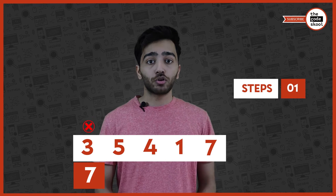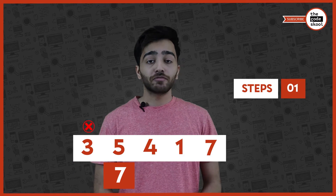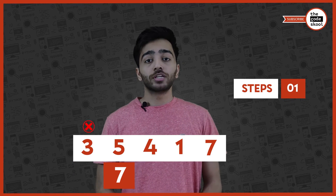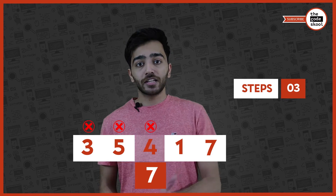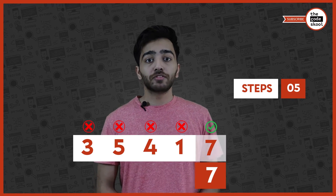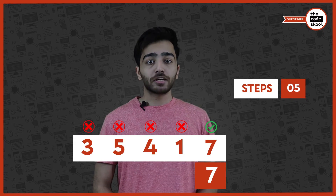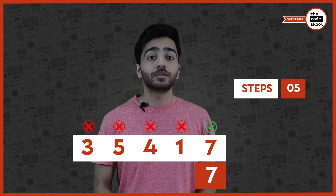Now let's look at another problem where we're given an array and a number, and we need to find if this number exists in the array. We start from the first element and check if it equals the given number — that's one step. Then we move to the next element and do the same thing, taking another step, and we keep doing this until we find the element. In the fifth step we find element 7, which equals the given number, so total steps is 5, equal to the number of elements in the array.